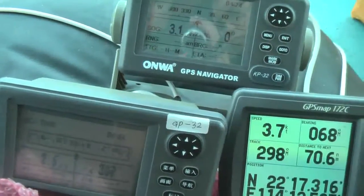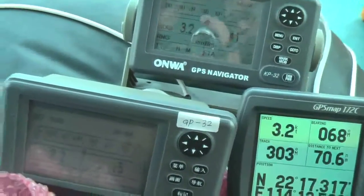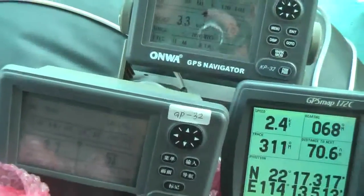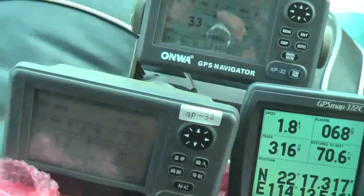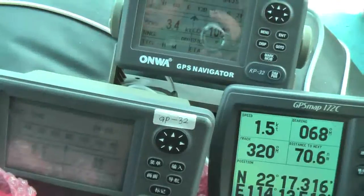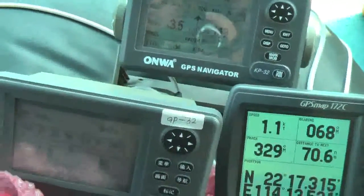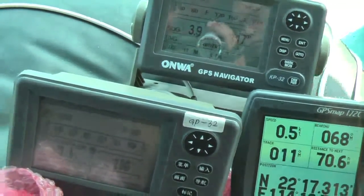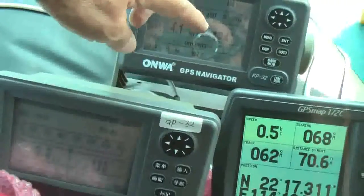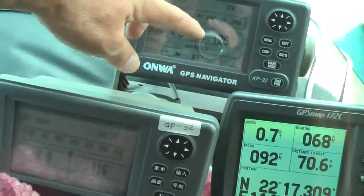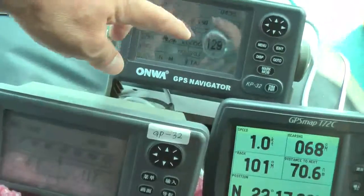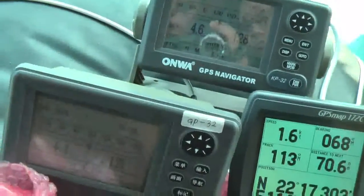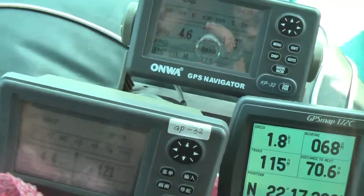Now we are changing the direction. We are changing the direction. Now we are pointing to the eastern side. Now we are changing the direction. Let's see. You can see the KP-32 now is catching up very, very good. 127 degrees, 29, 27. But the GP-32 seems to catch up slower than the KP-32.